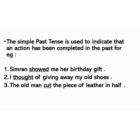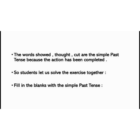The simple past tense is used to indicate that an action has been completed in the past. For example: 1. Simran showed me her birthday gift. 2. I thought of giving away my old shoes. 3. The old man cut a piece of leather in half. The words showed, taught, and cut are the simple past tense because the action has been completed.